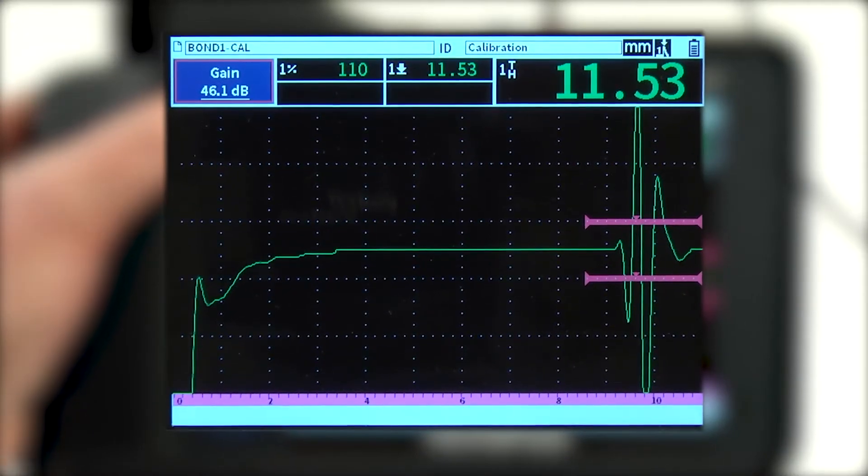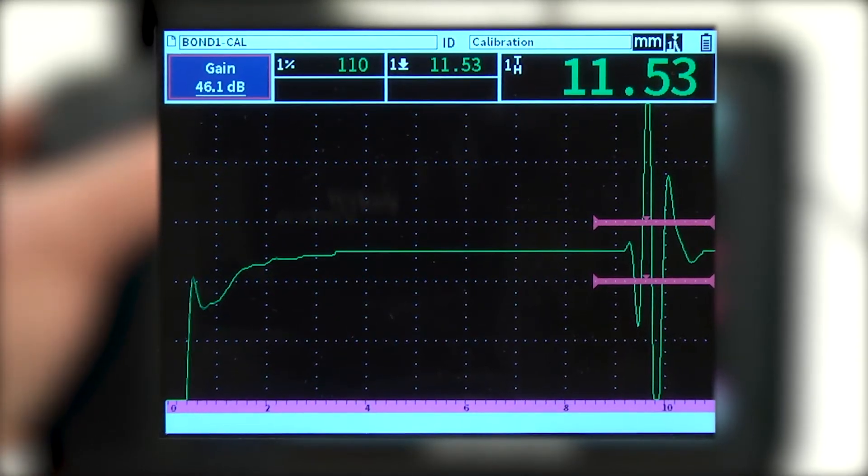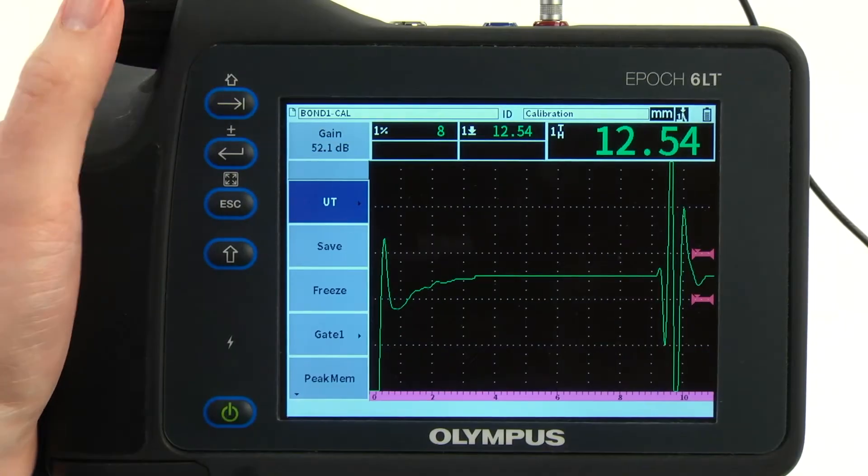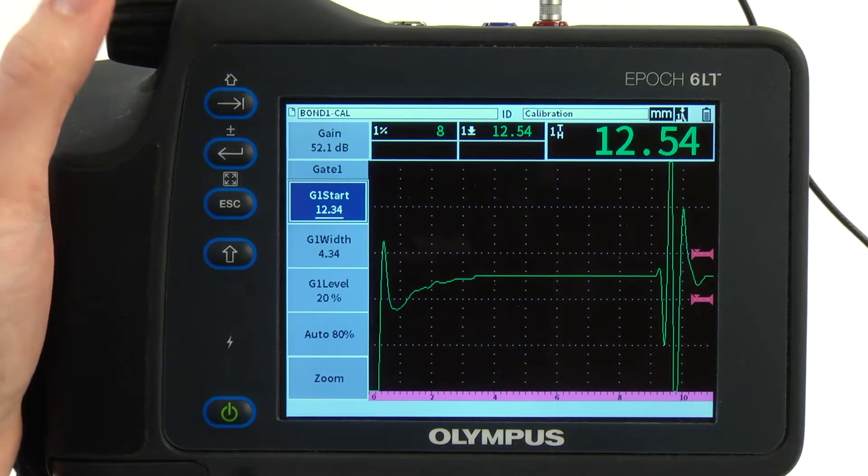The inspection mode provides a large, dynamic, full-screen A-scan and visible digital readings. Contextual menus and a sidebar offer quick access to common functions and setup parameters.